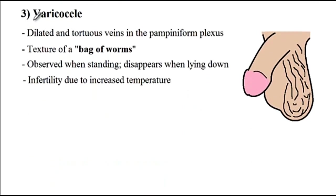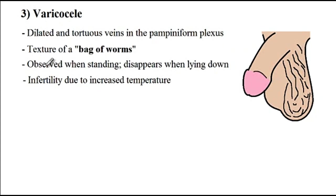The next condition is varicocele, where due to increased venous pressure there would be dilated and tortuous veins in the pampiniform plexus. On physical examination it has a texture of a bag of worms, as you can see in the image. Varicocele is usually observed in the standing position, and if the patient lies down, it would disappear.